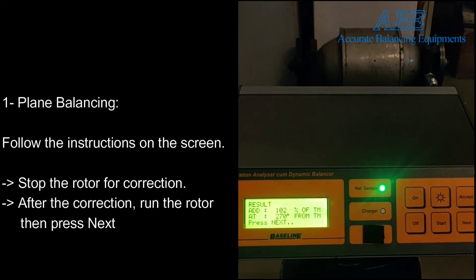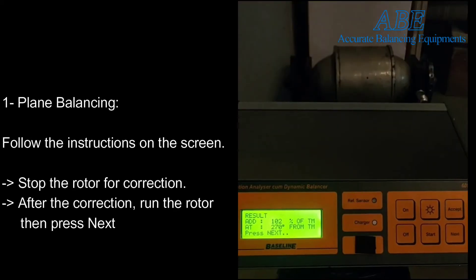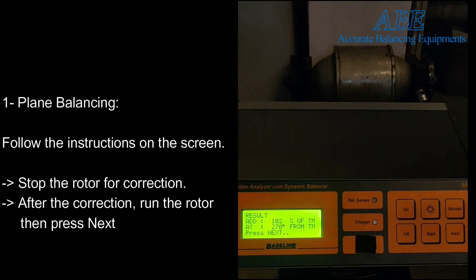Once the result comes, stop the rotor for the correction. The instrument is indicating that you need to add a weight that is 102 percent of the trial mass, and it is to be added at a position in the increasing direction, 270 degrees from the trial mass. After performing the correction, the unit will give you the option to save the constants, and then you can take a verification run to see the final vector.